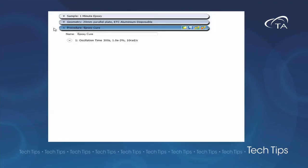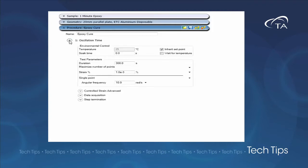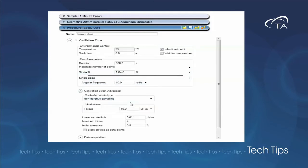This can be solved by using non-iterative sampling. This allows the strain to be adjusted to maintain a minimum torque. We will set the strain amplitude to 0.05%. Then we'll select non-iterative sampling and set a lower torque limit of 1 µNm.